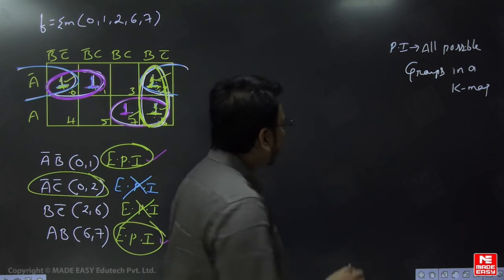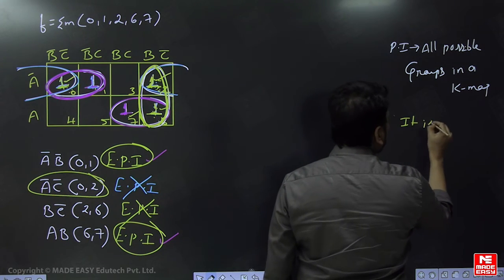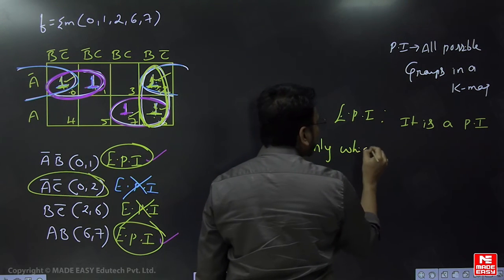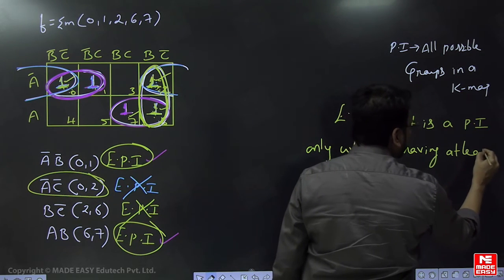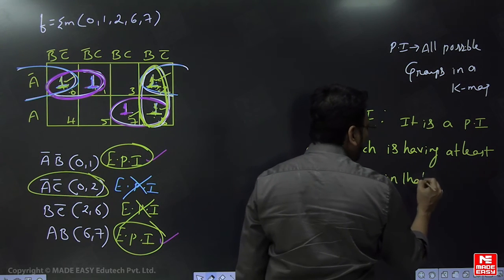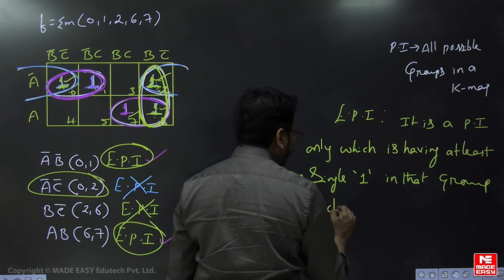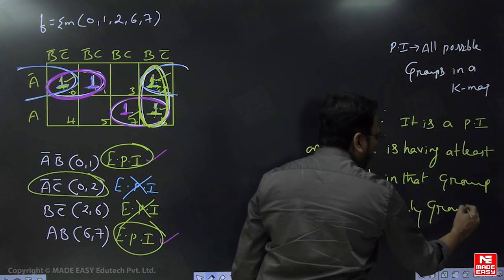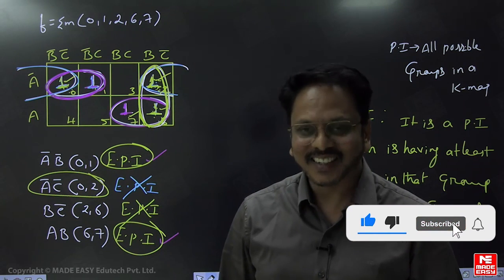So only the two groups ĀB̄ and AB can be considered as essential prime implicants. To summarize: an essential prime implicant (EPI) is a prime implicant which has at least a single minterm in that group which is uniquely grouped — meaning it is able to be grouped in only one way.